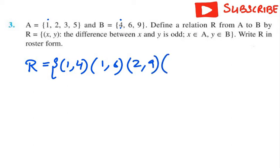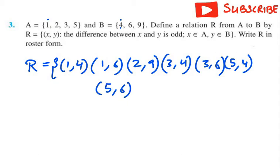The next is 3 and 4. 3 and 4 can be written, 1. Then we have 3 with 6. Then 3 with 9 can't go. So the next will be with respect to 5. 5 and 4 goes well because it will be an odd number. Then 5 and 6, then 5 and 9 not possible because it will form 4 which is even number. So this is R for question number 3.